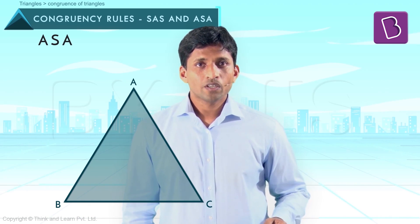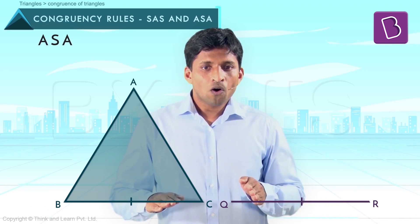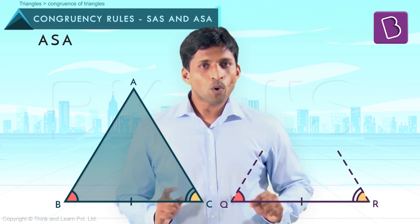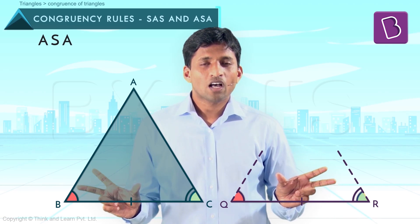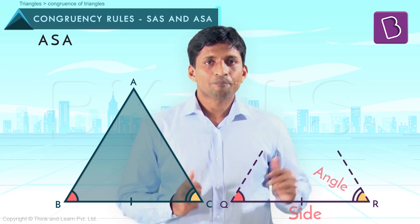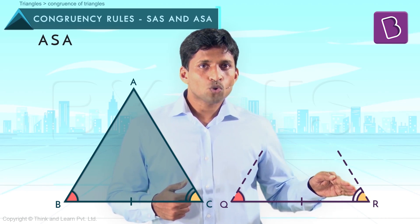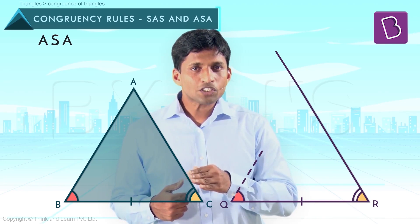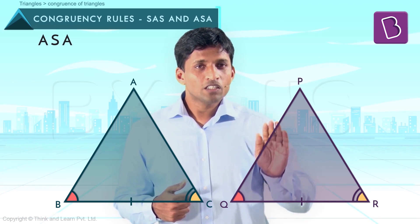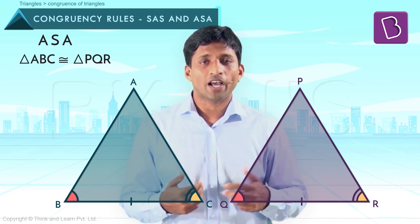To understand ASA better, first I'll take side QR equal to BC. Now angle Q equal to angle B and angle R equal to angle C. So two pairs of angles are equal and the included side is equal — that is ASA. Now let's try completing this triangle. Angle R is fixed, so I project this side. Angle Q is fixed, so I project this side — the length is not given, that's why I'm projecting. The point of intersection, named P, gives triangle PQR congruent to triangle ABC. That's the easiest way to visualize and understand the ASA rule for congruency.